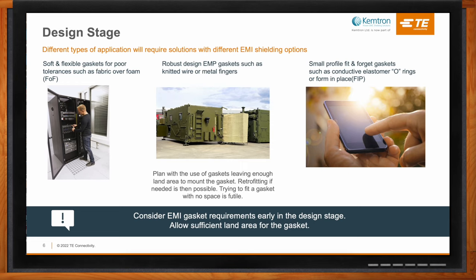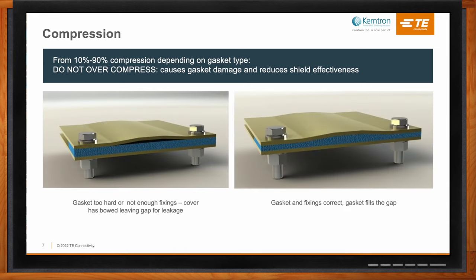Can you talk a bit about the role that compression plays in the type of gasket we need? Compression is an important design consideration. Different types of gasket material can offer different levels of compression, so it's important to select the material that will accommodate the gap and the tolerances of the application without being over-compressed. Over-compressing an EMI gasket can cause damage and reduce shielding effectiveness. Different gasket materials have different hardnesses and require different levels of closure force. You need to ensure the assembly is sufficiently rigid to compress the gasket without bowing — otherwise you'll get a gap forming, which will reduce the shielding effectiveness.